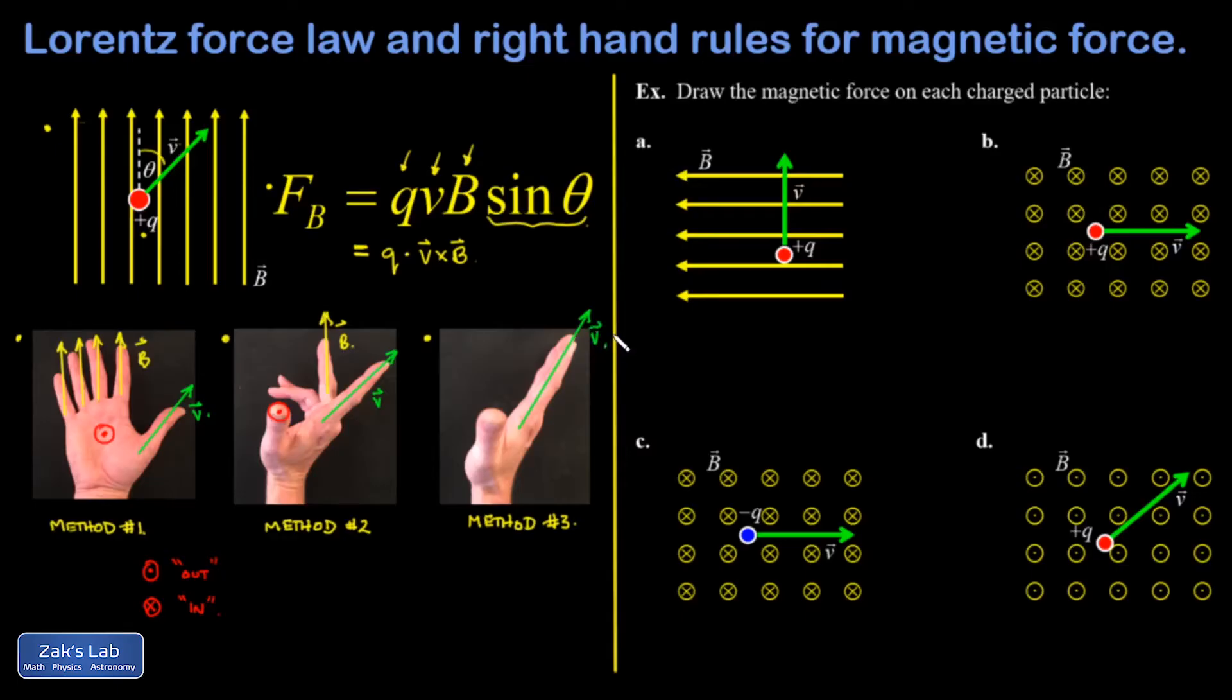So I orient my fingers in the direction of the velocity. And then I sweep my fingers out in an inward motion, so in the palmward direction, until they line up with B.